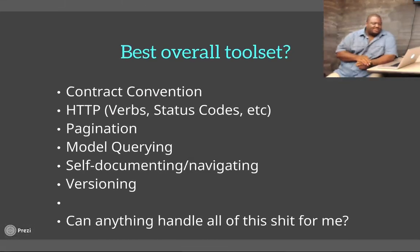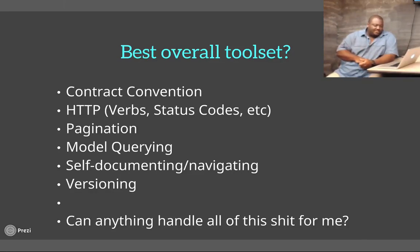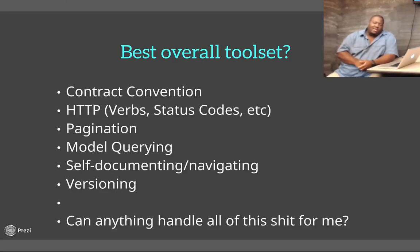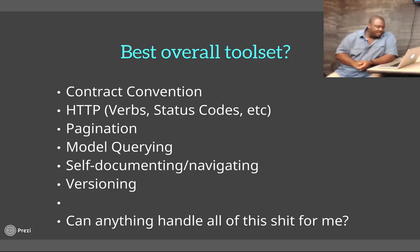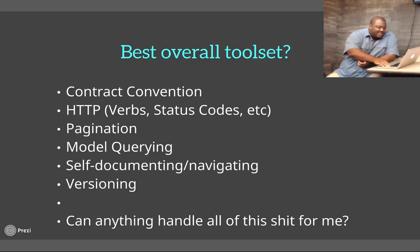The first question I asked, being lazy, was: is there anything that will do all of the things for me? Things we have to think about: the contract convention — how do we handle arrays, error codes, all of that? Most people are doing the HTTP verbs, gets and patches and so on, but we've got to come up with standards. More advanced things like pagination, model querying where you can navigate through the API programmatically, and versioning. Is there anything out there that can handle all of this for me? The answer I came up with was no.